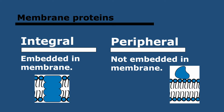Peripheral proteins, on the other hand, are hydrophilic on their surface — remember that globular proteins resemble that. They will not be embedded in the membrane, and most of them will be either attached to the phosphate heads or to the surface of integral proteins.